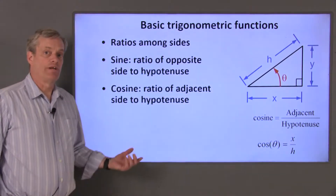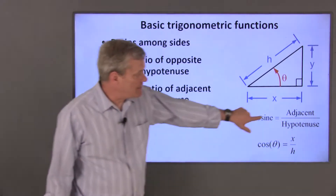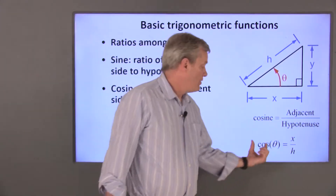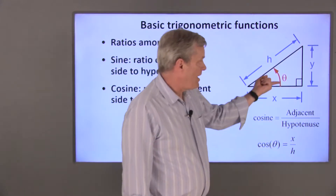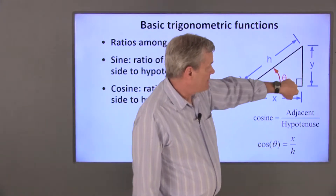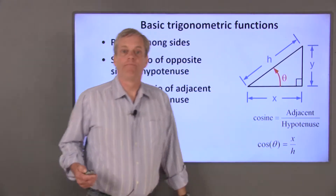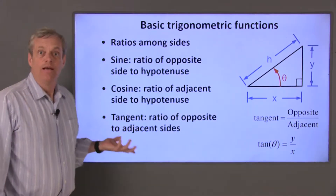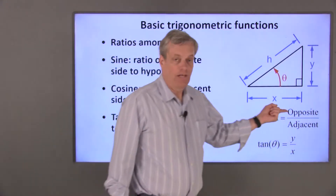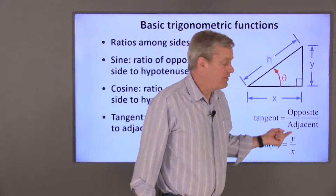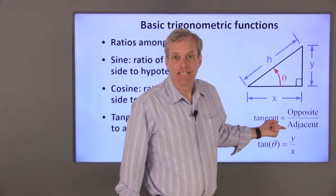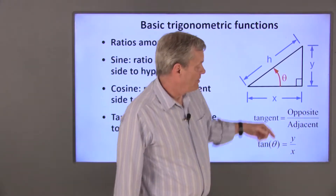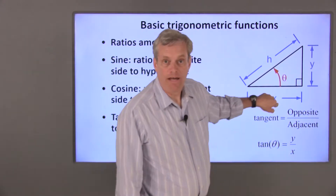The cosine of an angle is the ratio of the length of the side adjacent to the angle divided by the length of the hypotenuse. Cosine is abbreviated as cos, and cos of theta is X divided by H. The last trigonometric function I'll talk about in this video is the tangent. The tangent is the ratio of the length of the side opposite to the angle to the length of the side adjacent to the angle. Tangent is abbreviated as TAN, and for this angle, tangent of theta is Y divided by X.